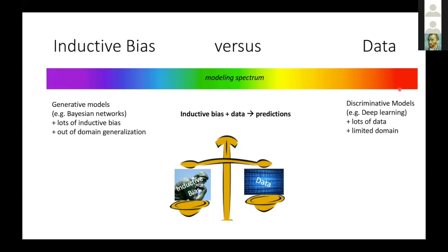On one end of the extreme, we have deep learning and discriminative models, like natural language processing and image analysis. On the other side of the spectrum, you might have things where you want to use Bayesian networks or generative models. You might care about out-of-domain generalization, because in a particular domain you might have data, but if you go out of that domain you might have very few or no data. On that side of the equation, it's very good to think hard about your generative models and the data-generating process.